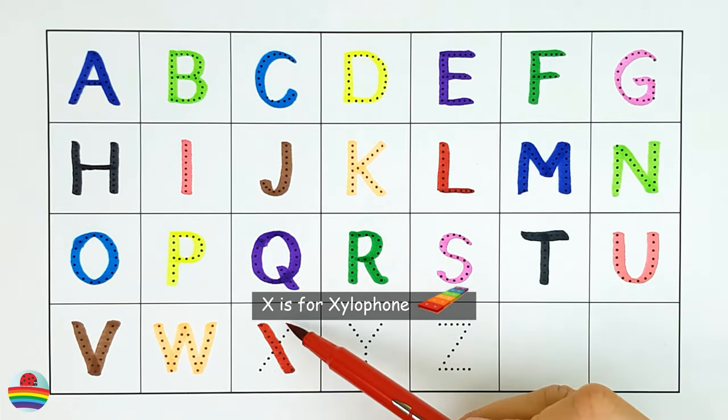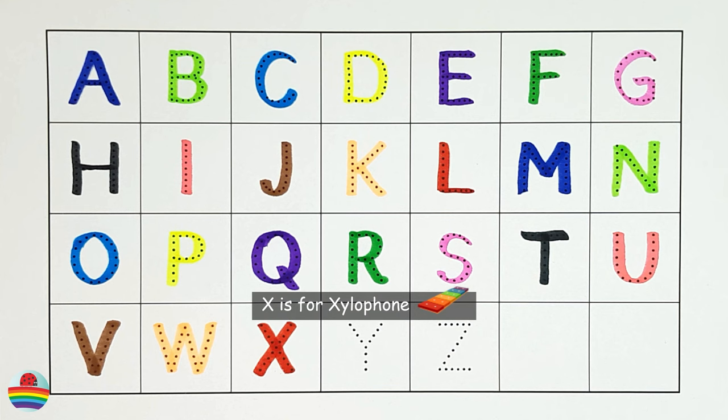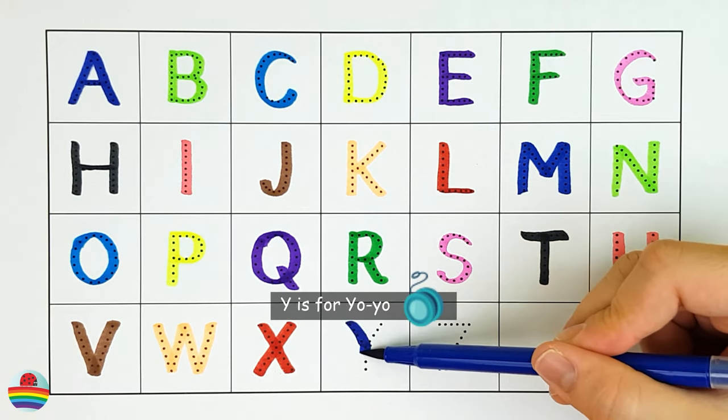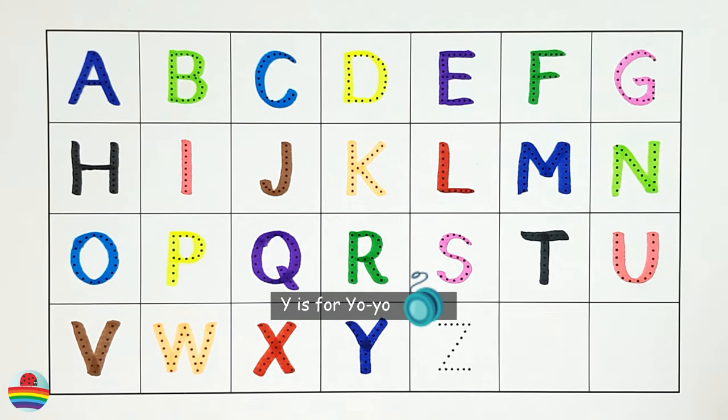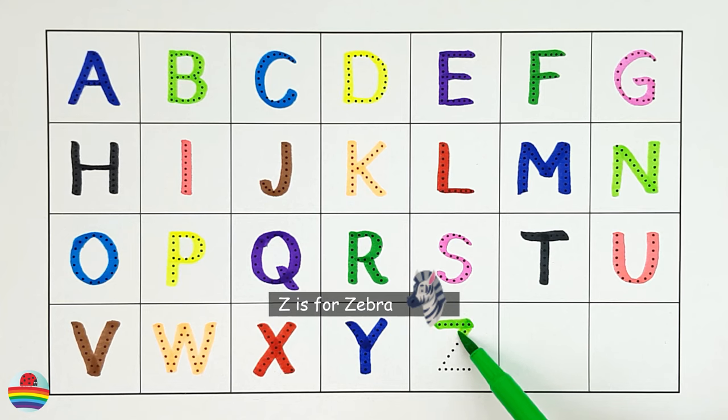X. X is for xylophone. X. Y. Y is for yo-yo. Y. Z. Z is for zebra. Z.